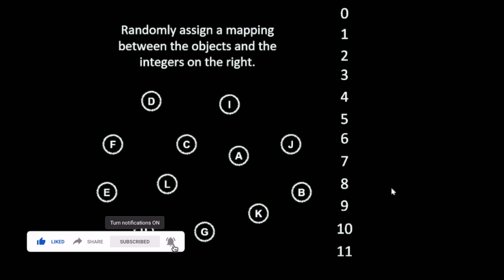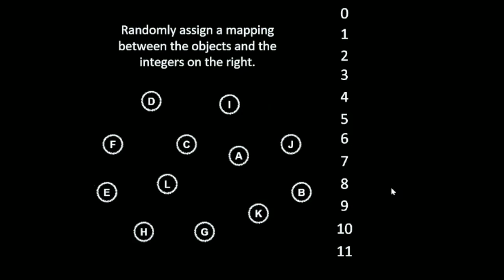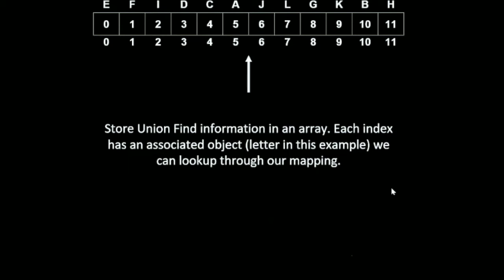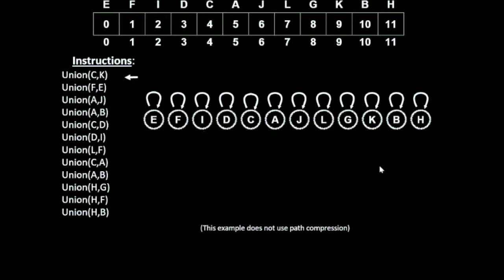So how do we use union and find operations here? I'm going to assign the vertices a number. Then I'm going to make an array which index represents the value. So I'm going to copy the value of the index into the cell of that array. Initially, the array will look like this. Index will be from 0 to 11 and the values will be also from 0 to 11. These are the instructions how to unionize. You want to make a union of C and K. What you will do is just make the value of K to match the value of C.